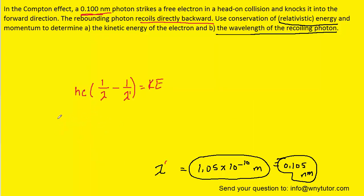We've got Planck's constant multiplied by the speed of light. And we'll keep them in their standard units. And then we're going to multiply that by one divided by the original wavelength of 0.10 nanometers. Let's not forget to convert that into the standard unit of meters multiplied by 10 to the minus 9, minus one over the wavelength of the recoiling photon, which we found earlier to be 1.05 times 10 to the minus 10. And that's going to equal the final kinetic energy of the electron.